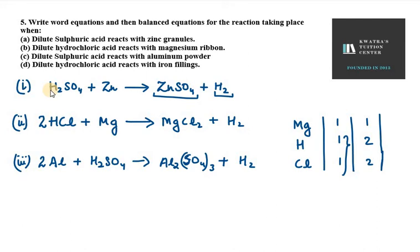But the sulfur atoms on the right side are 3, and oxygen on the right side is 12, while on the left side oxygen is only 4. So we need to multiply H₂SO₄ by 3. Now hydrogen becomes 6, sulfur becomes 3, and oxygen becomes 12. On the right side, we adjust H₂ to 3H₂ so hydrogen is also 6. The equation is now balanced.